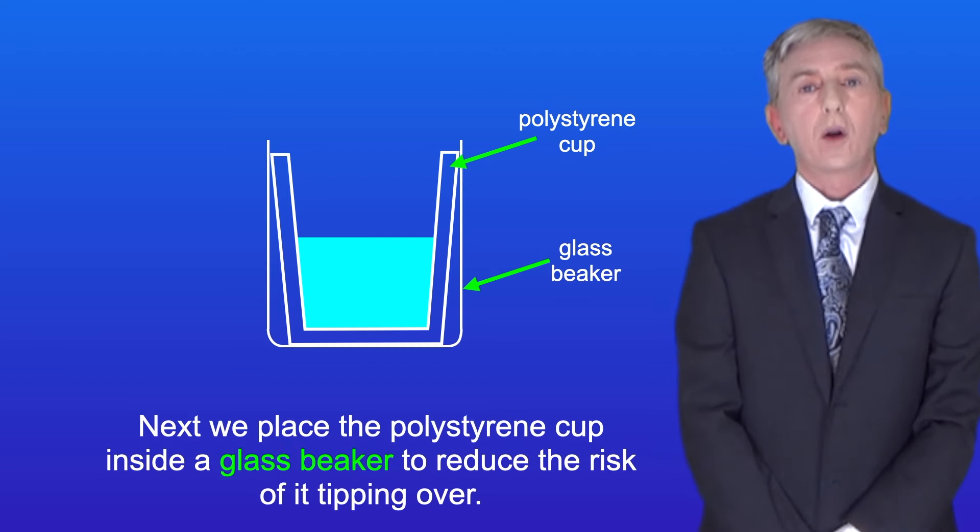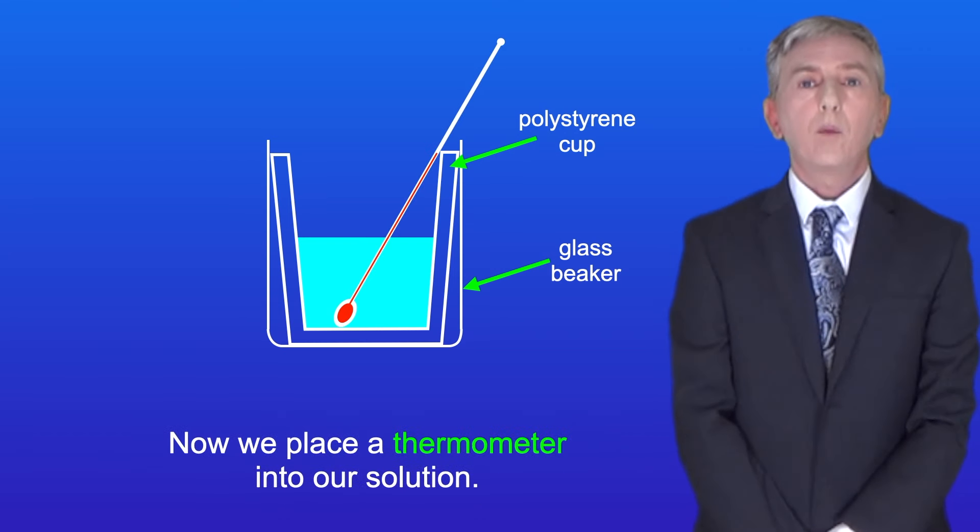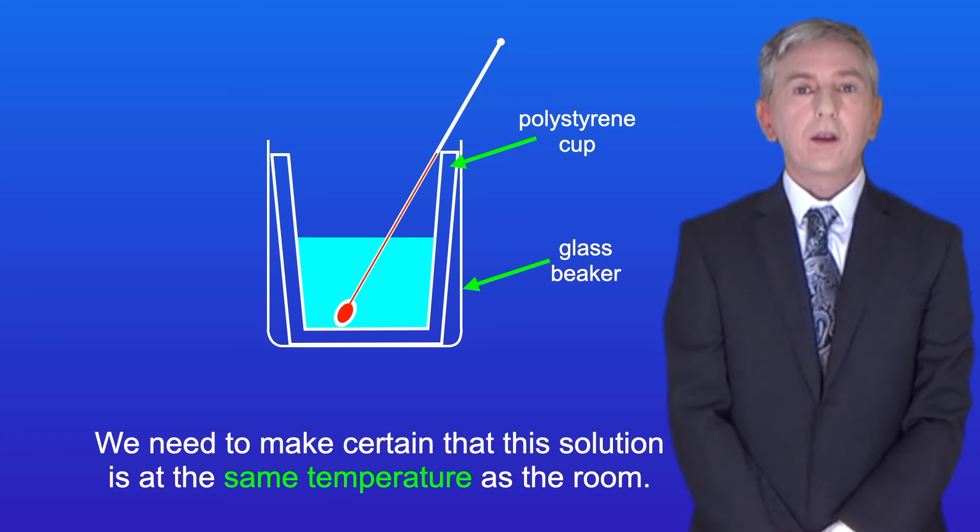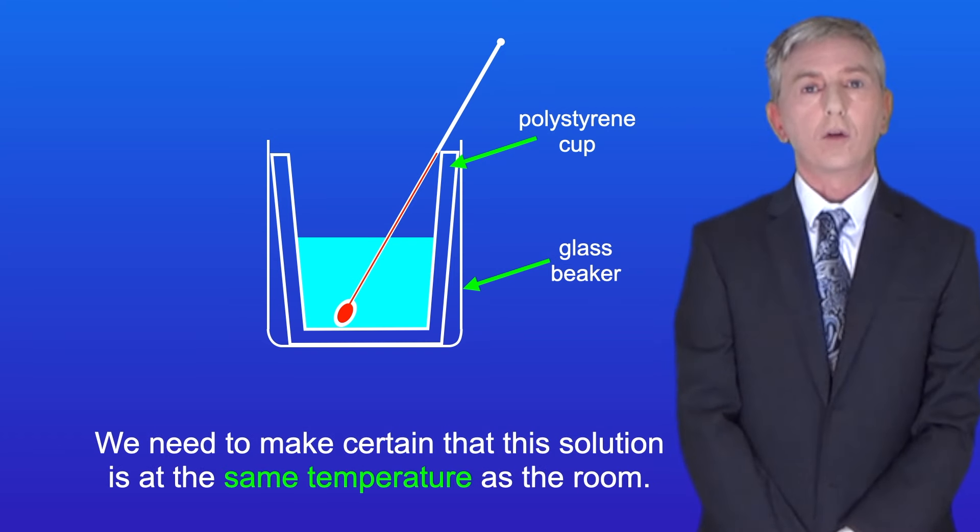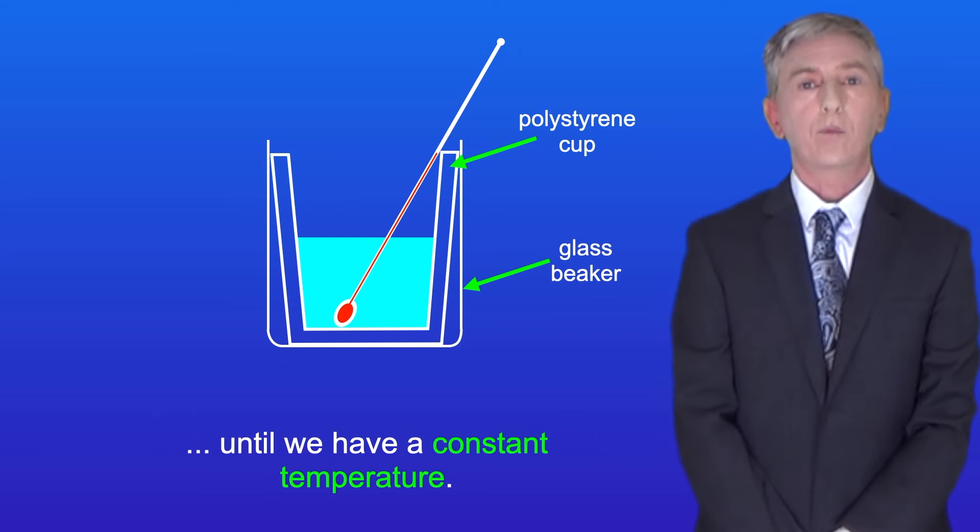Next we place the polystyrene cup inside a glass beaker to reduce the risk of it tipping over. Now we place a thermometer into our solution. We need to make certain that this solution is at the same temperature as the room, so we take temperature readings every 30 seconds until we have a constant temperature.